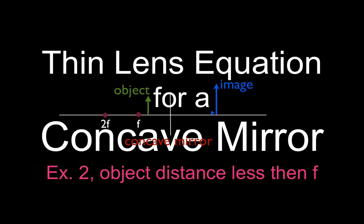In today's video, I'm going to go over how to use the thin lens equation to calculate the image size, distance, orientation, and type for a concave mirror. In this case, which we have example number two, the object distance is less than f, or the object is inside the focal point.